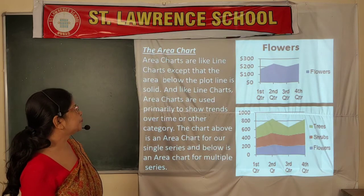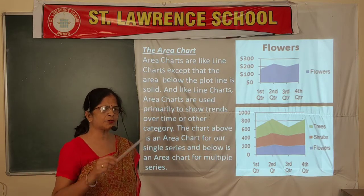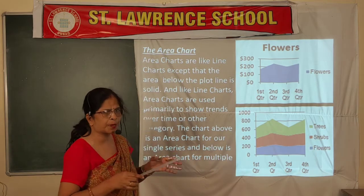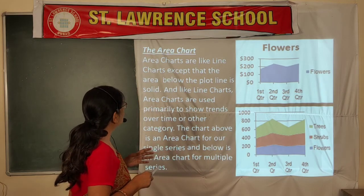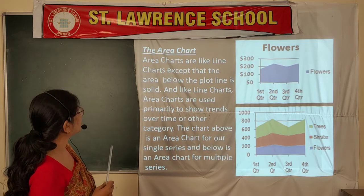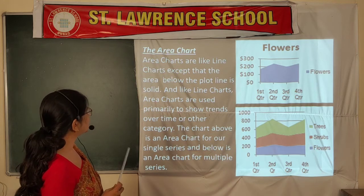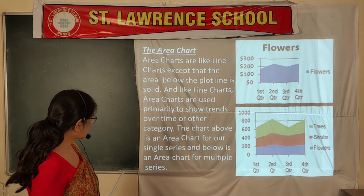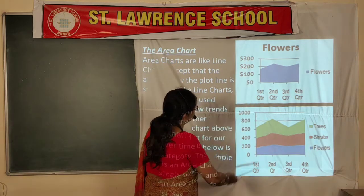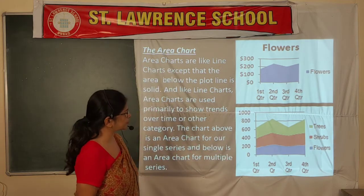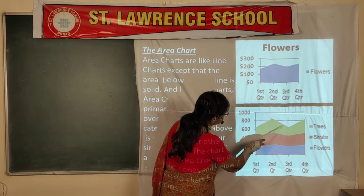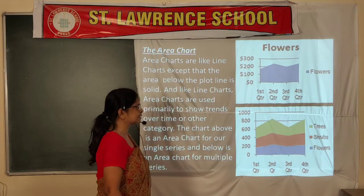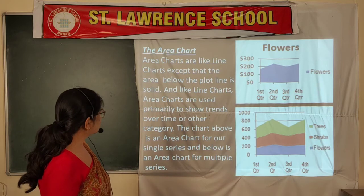Next is the area chart. This is just like a line chart, but instead of showing only the line where markers are placed, the area chart fills the area below the plotted line as a solid region. Area charts are used primarily to show trends over time or other categories. One example shows a single series for flowers, and another shows all three data series — trees, shrubs, and flowers — with solid filled areas.